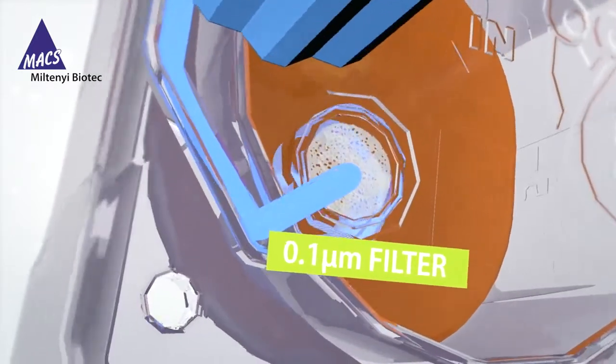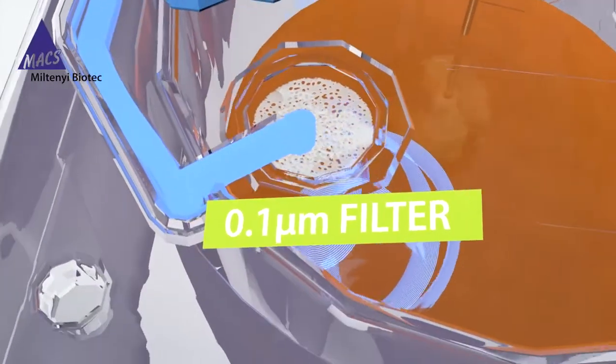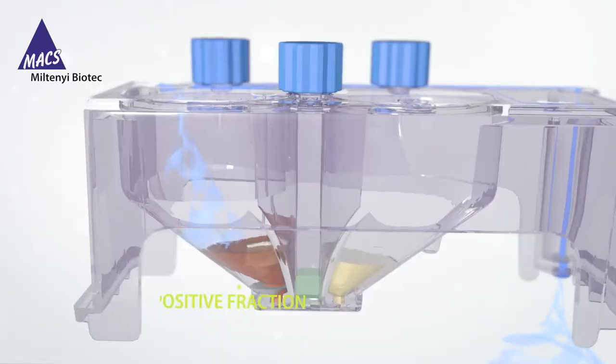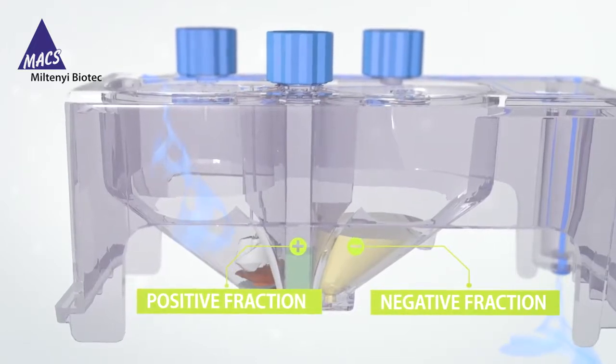The very mild air pressure drives the cell suspension through a microfluidic channel onto the microchip, where the selected target cells are then sorted into positive and negative fractions.